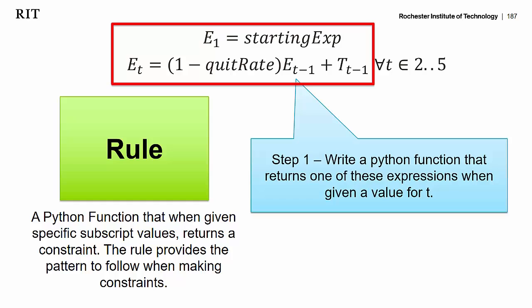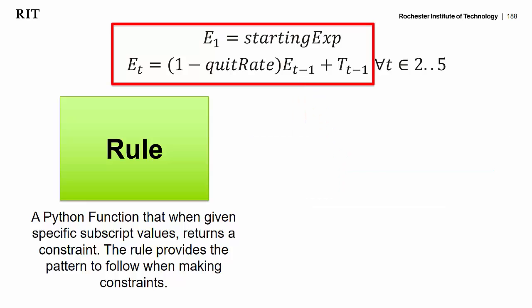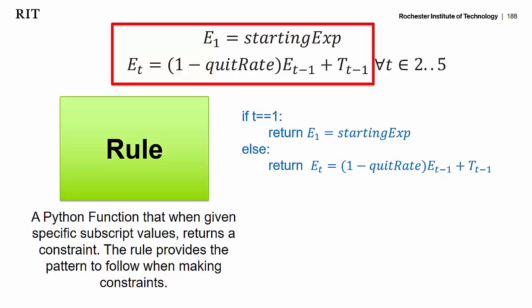We're going to write the Python function that returns one of these expressions when we give it a value for t. In this particular rule, we're going to have an if statement. The logic says: if the value for t is equal to one, make the first constraint — e1 equals my starting experience parameter. And if the value of t is not one, follow the second pattern: return e sub t equals (1 minus quit rate) times e sub t-minus-1 plus t sub t-minus-1.